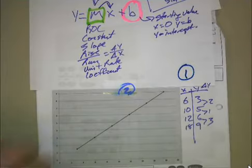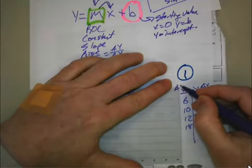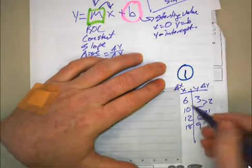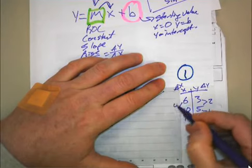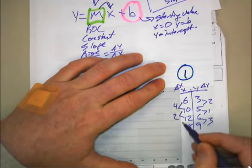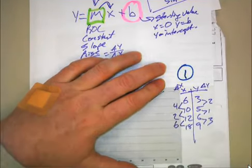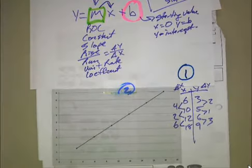But to be certain, we also have to verify by looking at our delta X. And we see that our delta X here is 4, 2, and 6. Again, different rates of change each time. But in order to be certain, we have to look at your delta Y over delta X.